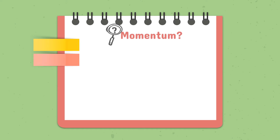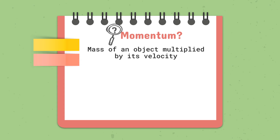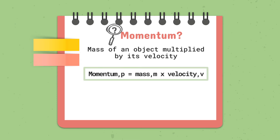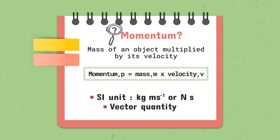Now, what is momentum? Momentum is the mass of an object multiplied by its velocity. Momentum P equals mass M times velocity V. The SI unit for momentum is kg·m/s. Momentum is a vector quantity.